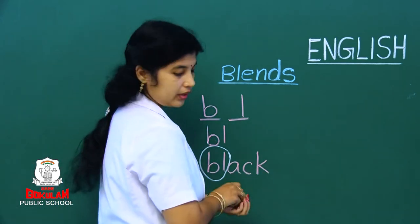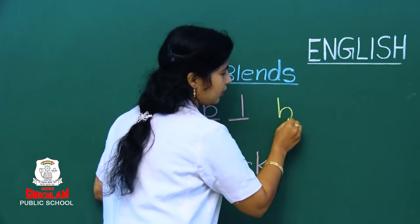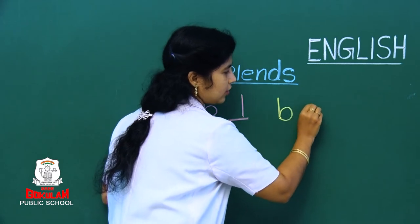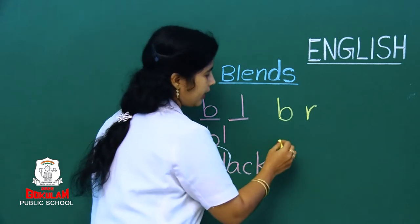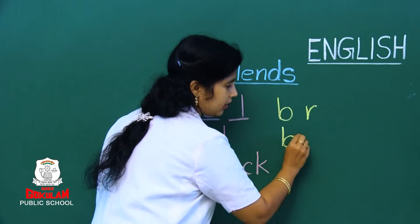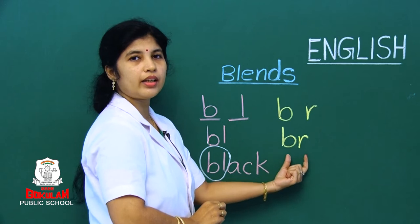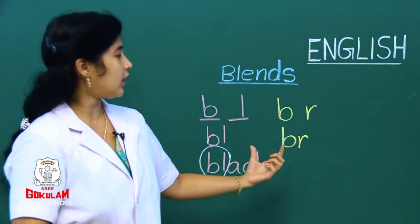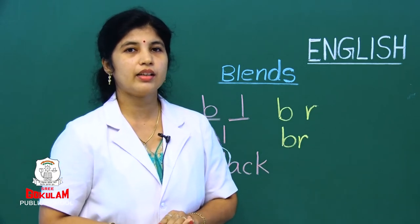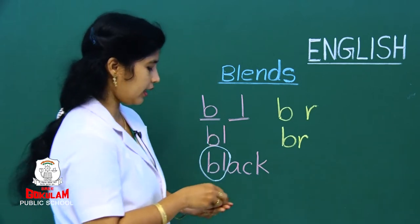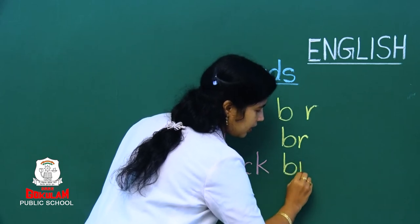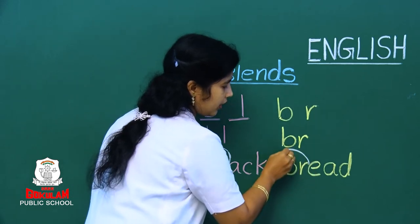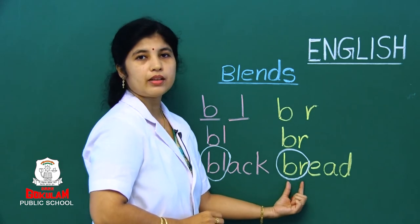I will show you one more example. Which letter is this? It is B. And the next letter — which letter is this? R. Now we are blending both consonants together. B and R. How do we say this? Do you know some word beginning with BR? Bread. So what is the spelling? B, R, E, A, D — bread. The two consonants combine together and we get BR.